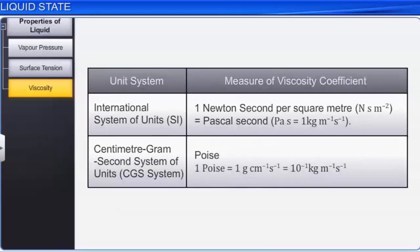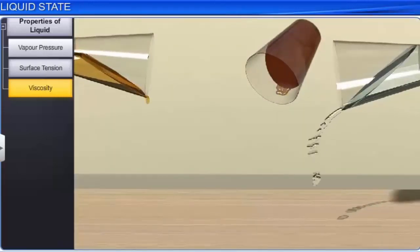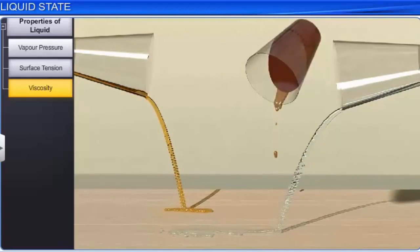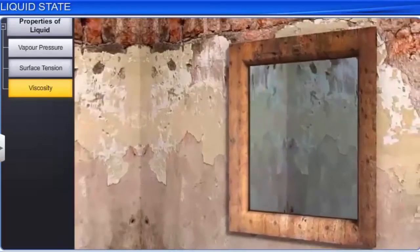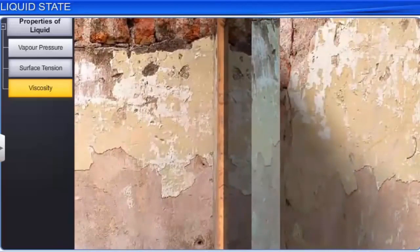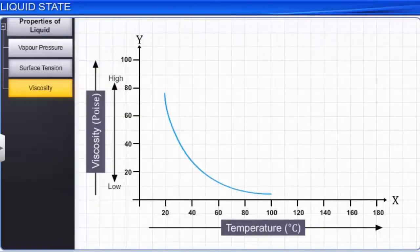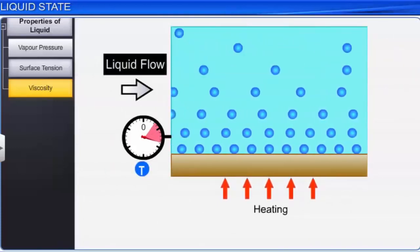An increase in viscosity decreases the flow of a liquid. An example of a highly viscous liquid is glass. Glass is so viscous that it would take years to move a few inches. The mobility of glass can be noticed by measuring the increased thickness of the window panes of old buildings at the bottom of the window. An increase in temperature decreases the viscosity of liquids. At high temperatures, the molecules have high kinetic energy to overcome the intermolecular forces, thus allowing the liquid layers to pass over each other.